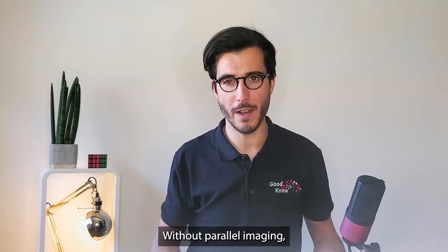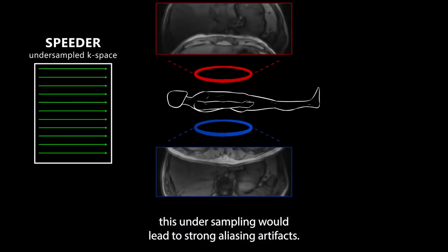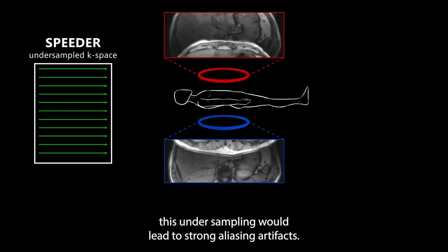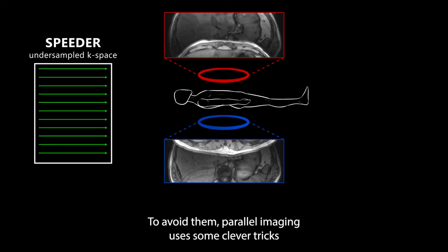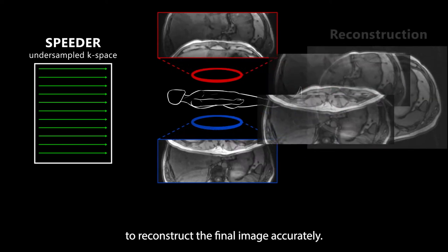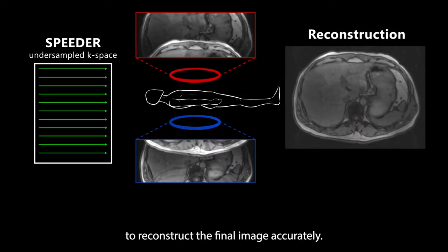Without parallel imaging, this under-sampling would lead to strong aliasing artifacts. To avoid them, parallel imaging uses some clever tricks to reconstruct the final image accurately.